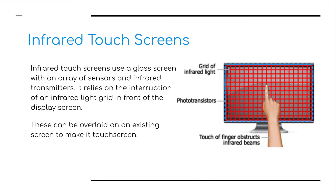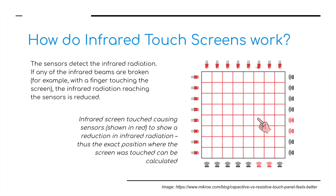The final type is infrared touch screens, which use a grid with X and Y coordinates. Infrared touch screens use a glass screen with an array of sensors and infrared transmitters, relying on the interruption of an infrared light grid in front of the display screen. These touch screens can be overlaid on an existing screen to make any device a touch screen. The sensors detect infrared radiation — if any of the infrared beams are broken by a finger, sensors detect a reduction in infrared radiation and calculate the exact touch position using X and Y coordinates.